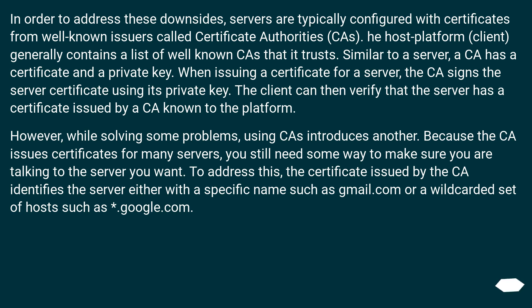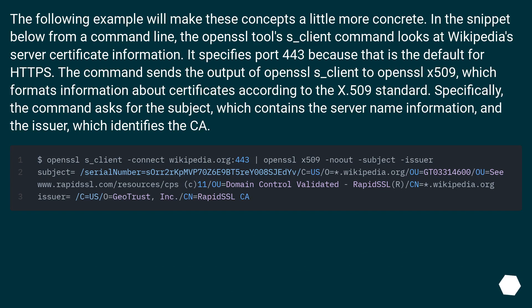However, while solving some problems, using CAs introduces another. Because the CA issues certificates for many servers, you still need some way to make sure you are talking to the server you want. To address this, the certificate issued by the CA identifies the server either with a specific name such as gmail.com or a wildcarded set of hosts such as *.google.com. The following example will make these concepts more concrete. Using the OpenSSL s_client command, we look at Wikipedia's server certificate on port 443, the default for HTTPS. The command output is piped to OpenSSL x509, which formats certificate information according to the X.509 standard, showing the subject (server name) and the issuer (the CA).